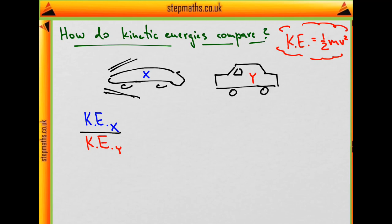The ratio is going to be simply the ratio of their respective mv squareds. I cancelled the halves because they are the same for both, and if I split it up like this, this is what I get.